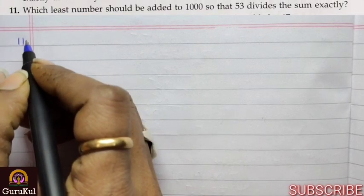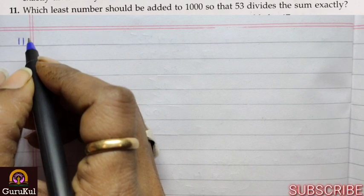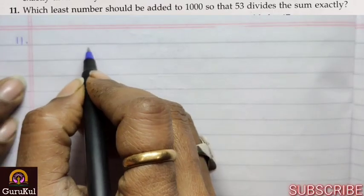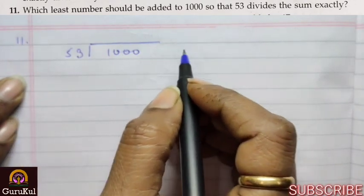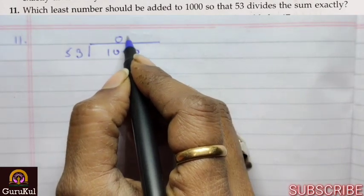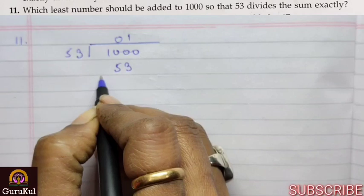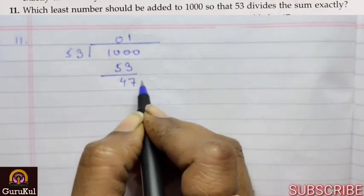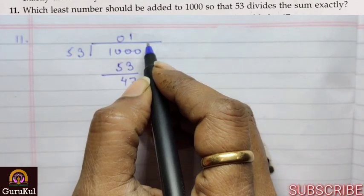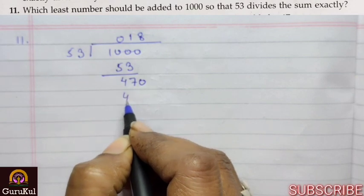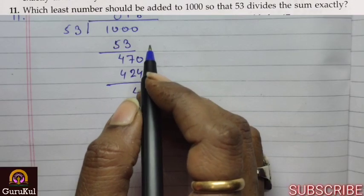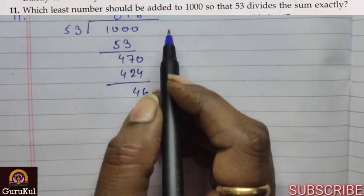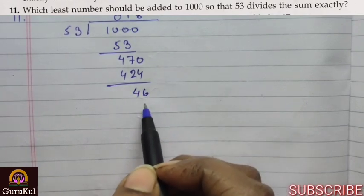Sum number 11. We have to find the least number which should be added to 1000 so that 53 divides the sum exactly. So let us begin. We will first divide 1000 by 53. 53 once is 53, remainder is 47. We will bring down 0 here. It's 424, remainder is 46. So after dividing 1000 with 53, we got the quotient 18 and remainder 46.